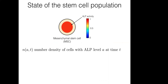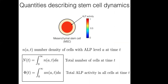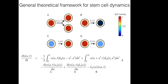Theoretically, the state of the stem cell population is described by the quantity n(a, t), where 'a' signifies the ALP level of the cell at a given time t, and n is the number density of cells with ALP level a at time t. From this quantity we can obtain two more quantities: capital N, the total number of cells at any time t, and phi, the total ALP level in all cells at any given time t.